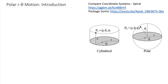Before we get into polar versus cylindrical, let's look at these two diagrams. Cylindrical coordinate systems use a distance r from an origin, an angular position theta for that position vector, and then a third dimension z measuring a vertical distance perpendicular to the r-theta plane. In a polar coordinate system we use the same r and theta, but the third dimension is a second angle, phi.